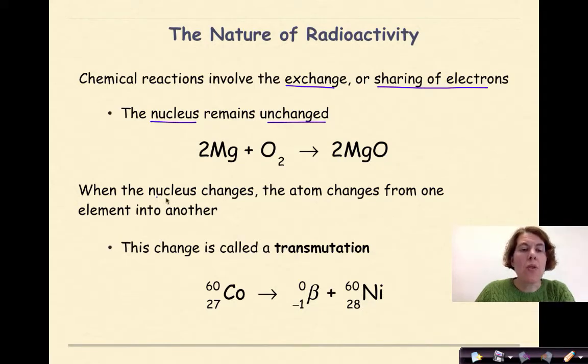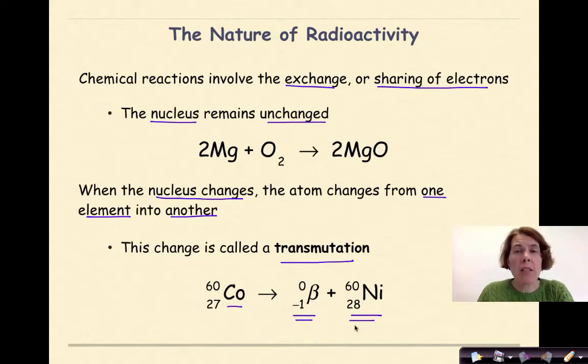When the nucleus changes, however, the atom changes from one element into another. This is called transmutation. So for example, here I have cobalt-60 undergoing beta decay to form nickel-60. We will talk about how this process works later on in future tutorials.